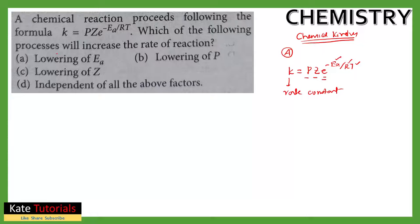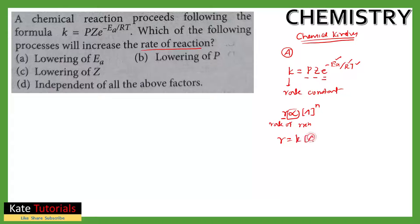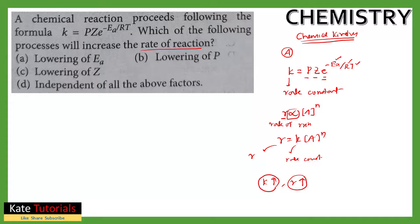The question asks which process will increase the rate of reaction. We know that the rate of reaction is proportional to the concentration of the reactant. If the reactant has order n, then rate r = k·[A]^n, where r is the rate of reaction, k is the rate constant. As k increases, the rate of reaction also increases.